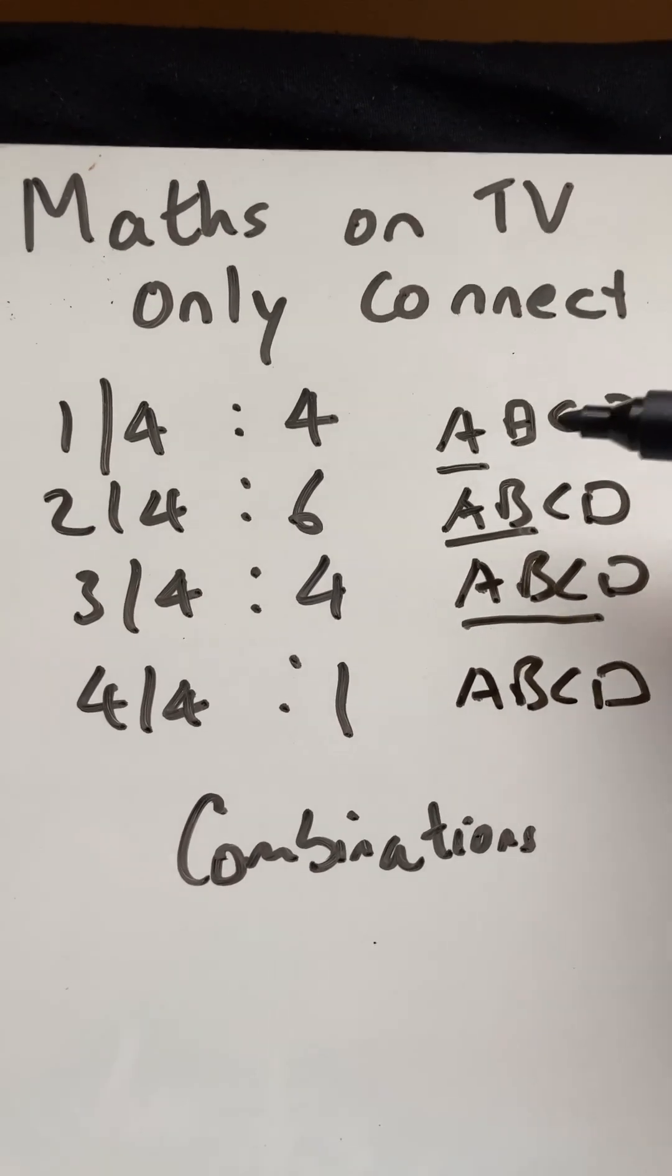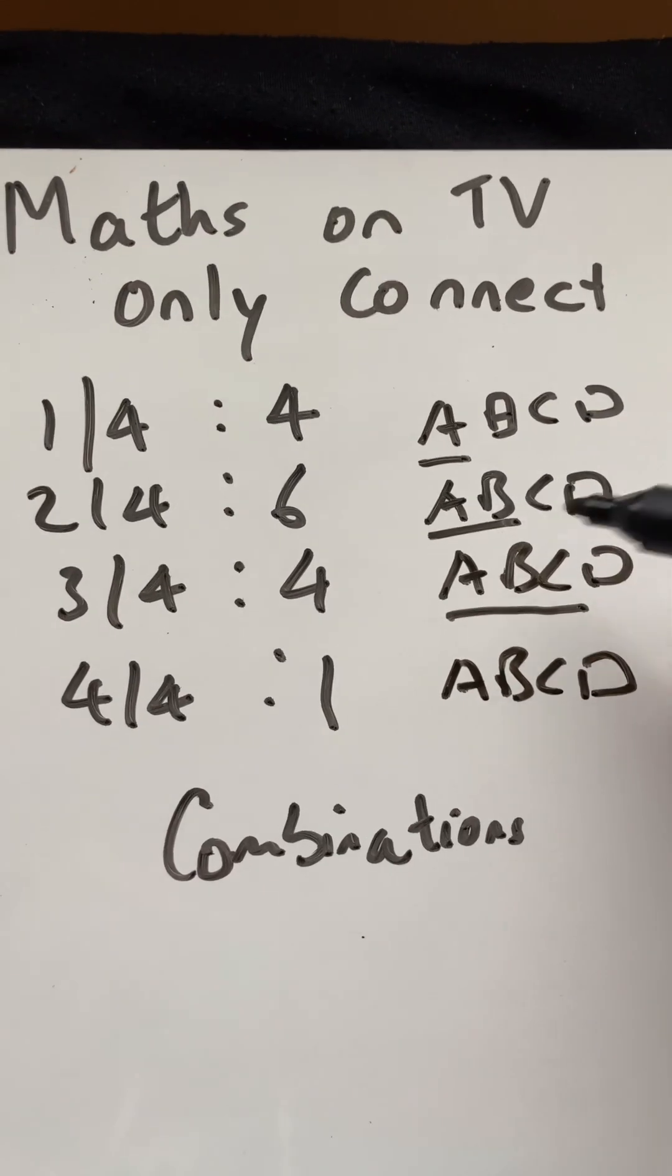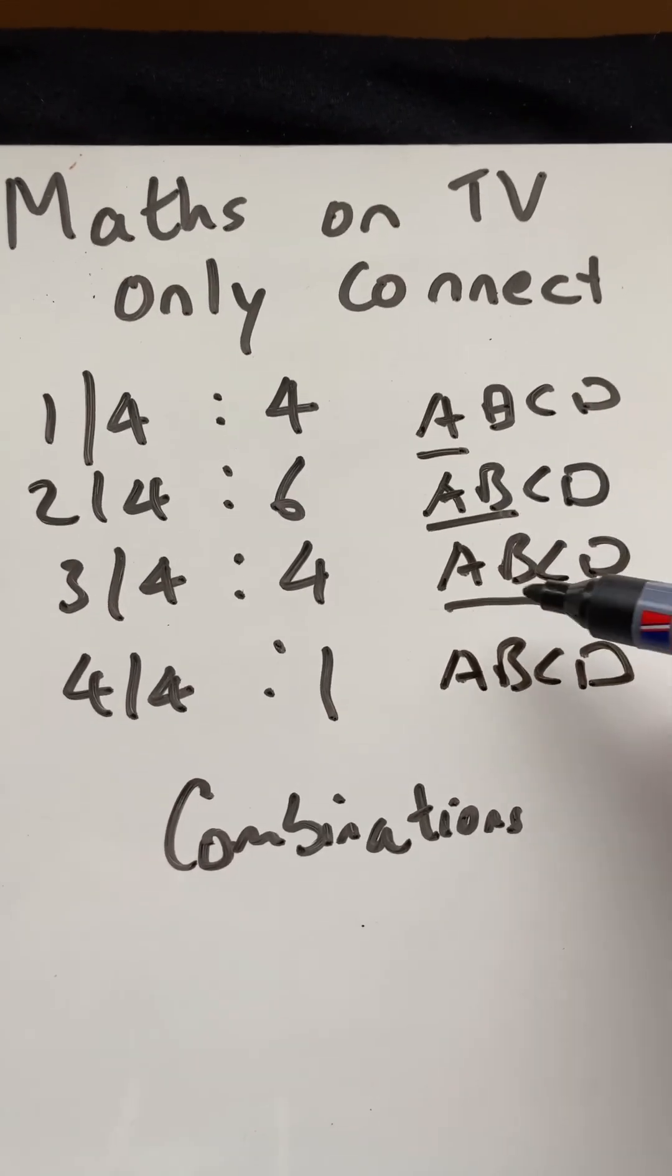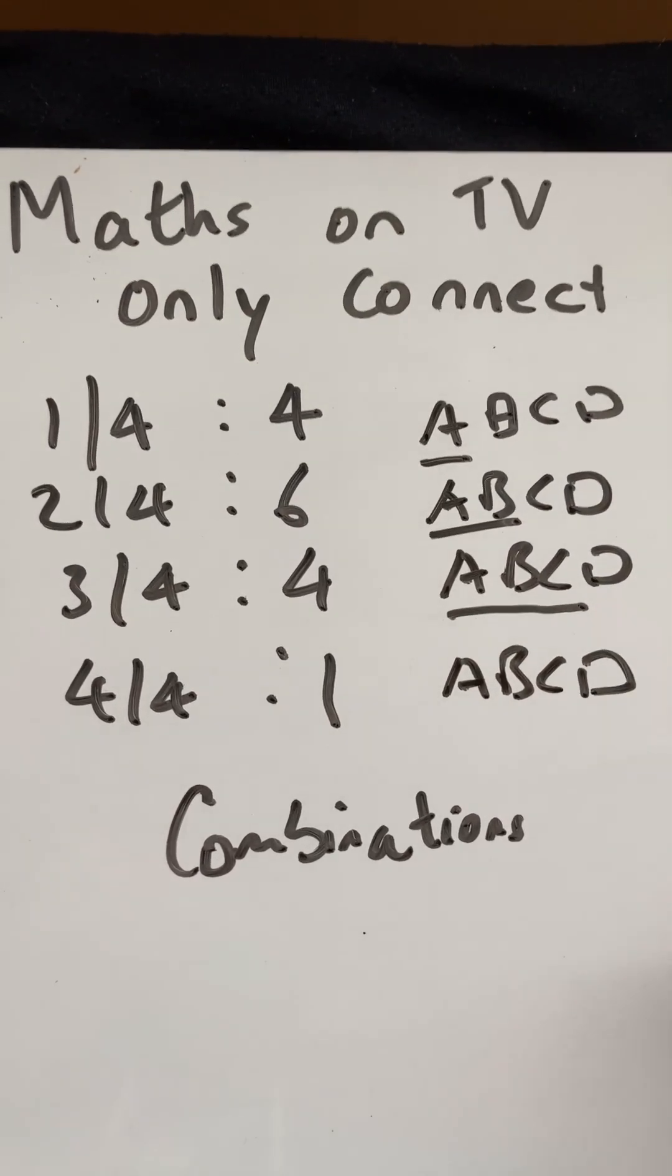If you look at that, there's four different ways I could choose one of those letters, six ways to choose two, four ways for three, and one way for all four.